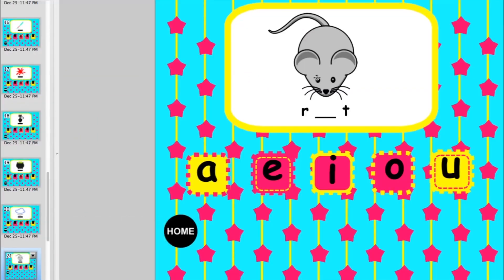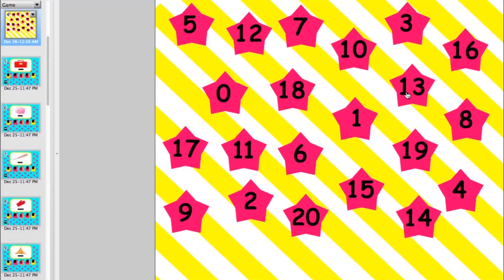In this vowels game students can practice short vowels. They look at the image and the beginning and ending letters to help them. When they touch the right vowel it will dance. If they touch the wrong vowel it's not going to do anything at all.